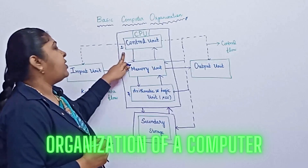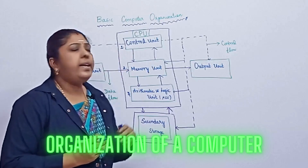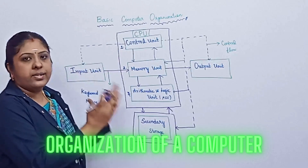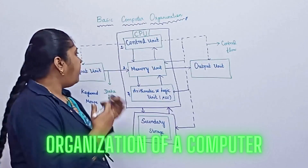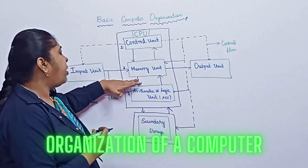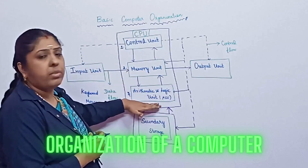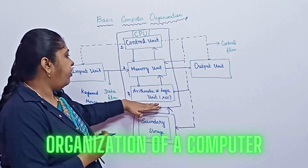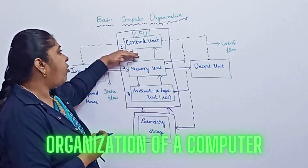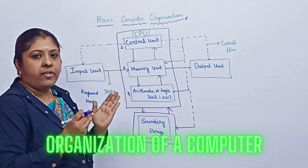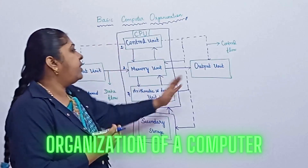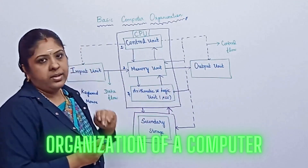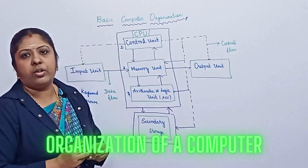First, the control unit. It takes overall control — after receiving the data or instruction, it processes it, uses the memory unit whenever needed, and uses the arithmetic and logic unit if any processing is needed. It takes overall control, finds the result after processing, and sends it to the output unit. This is the general process of the control unit.